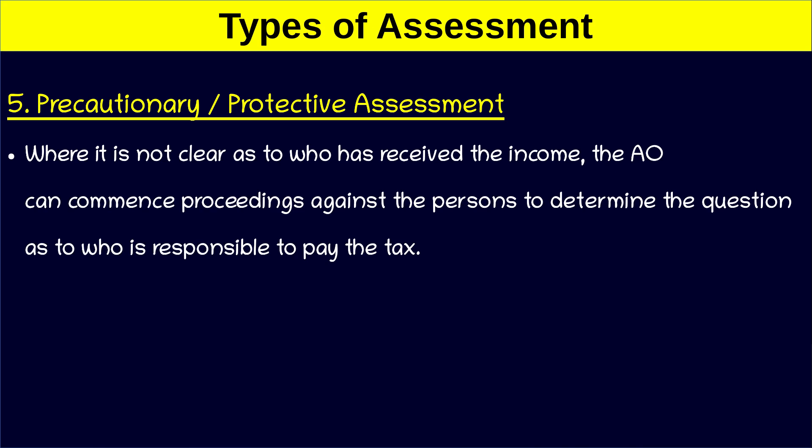The fifth type is precautionary or protective assessment. When it is not clear as to who has received a particular income, the assessing officer can commence proceedings against the person to determine the question. This is the requirement for protective assessment.